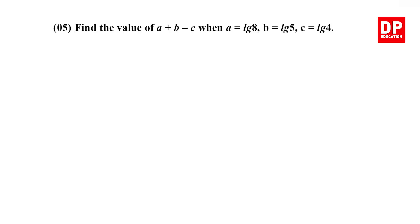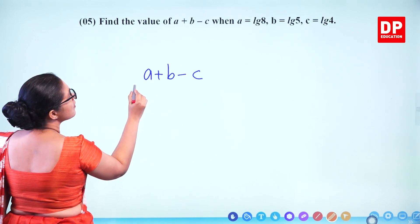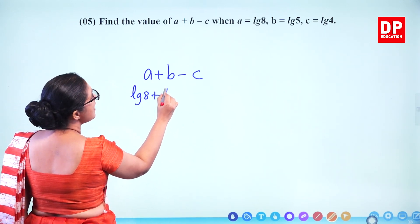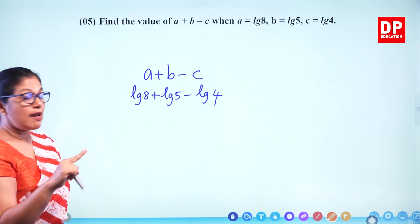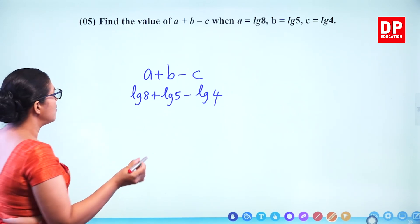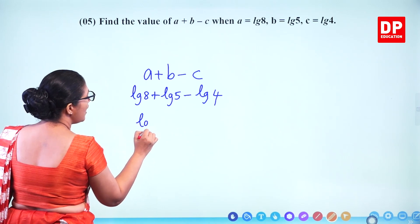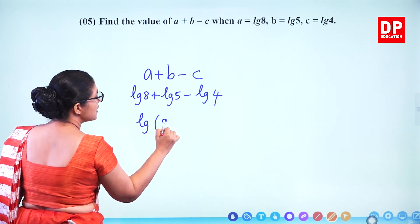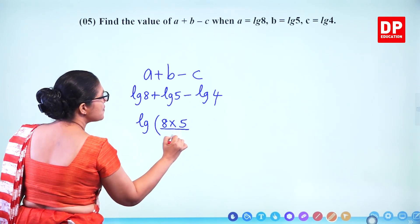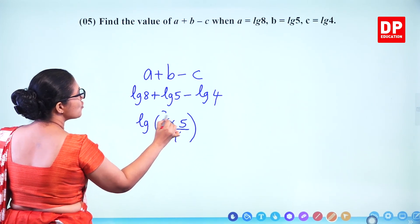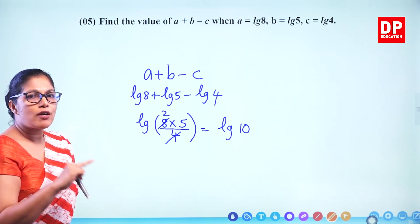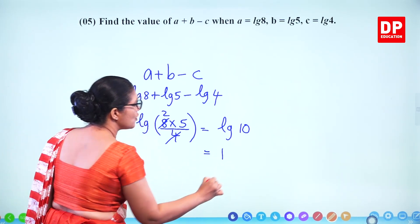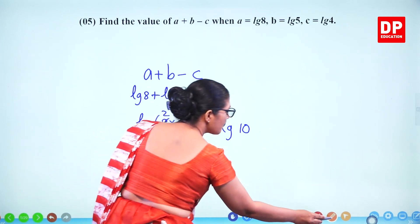Question number 5. Find the value of A plus B minus C when A equals lg 8, B is lg 5, C is lg 4. LG means log base 10. Using laws of logarithm: addition becomes multiplication and subtraction becomes division. So lg 8 plus lg 5 minus lg 4 equals lg(8×5÷4) equals lg 10. Since the base and number are the same, log base 10 of 10 equals 1. The answer is 1. Two marks.